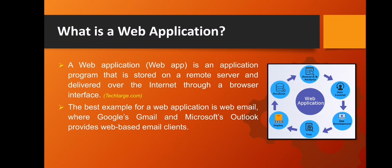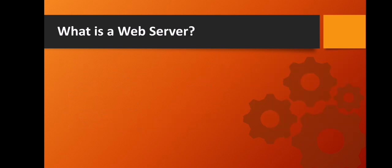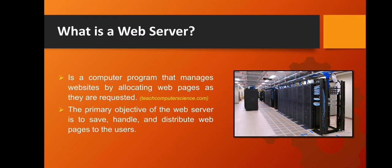Notice that a web app always involves a client and a server. Let me first define what a web server is. A web server is a computer program that manages websites by allocating web pages as they are requested. A web server is different from a remote server. The primary objective of a web server is to store, handle, and distribute web pages to users, while a remote server provides access to shared data and objects.